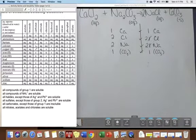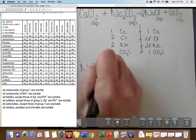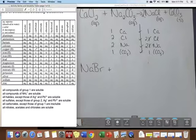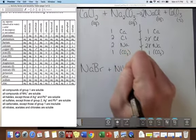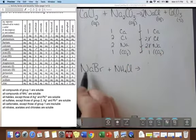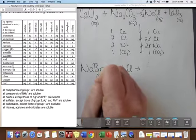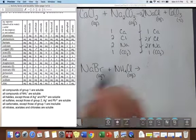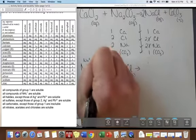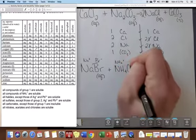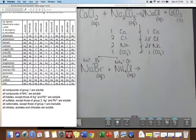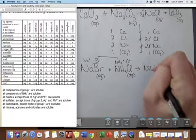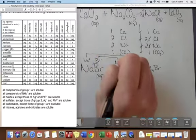So, let's try another one. I'll do sodium bromide plus ammonium chloride. So, sodium bromide, I have group 1 and a halogen, so that's going to be aqueous. Ammonium chloride, all compounds of ammonium are soluble, so that's going to be aqueous as well. So, I've got Na plus, Br minus, NH4 plus, and Cl minus. So, ammonium and bromide will come together, and sodium and chloride come together.